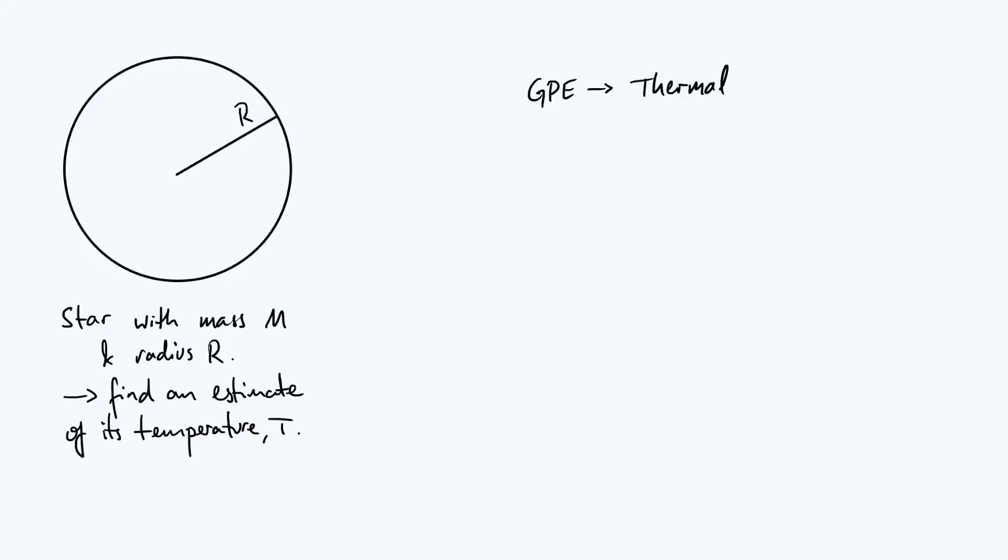So the method we're going to use is an energy-based method and the key idea is that when we have a cloud of gas and dust that collapses to form a star it releases lots of gravitational potential energy. It starts with close to zero gravitational potential energy and as it gets more and more compact its gravitational potential energy becomes negative. Now that gravitational potential energy that's released has to go somewhere and we're going to assume that all of the released GPE becomes the thermal energy of the star.